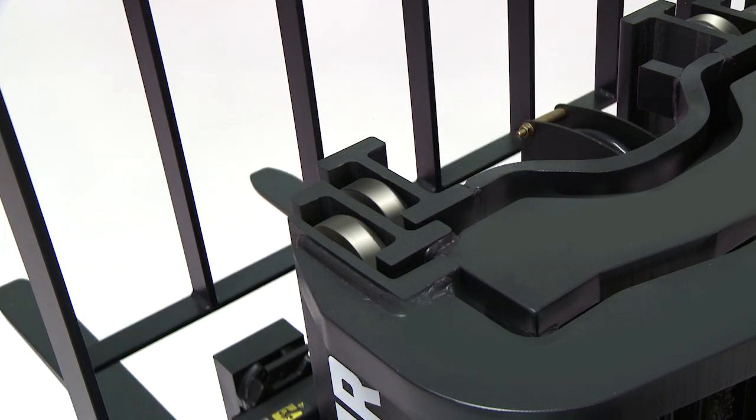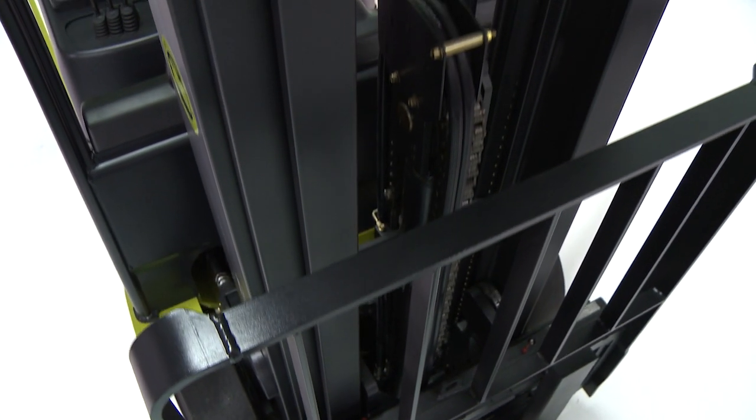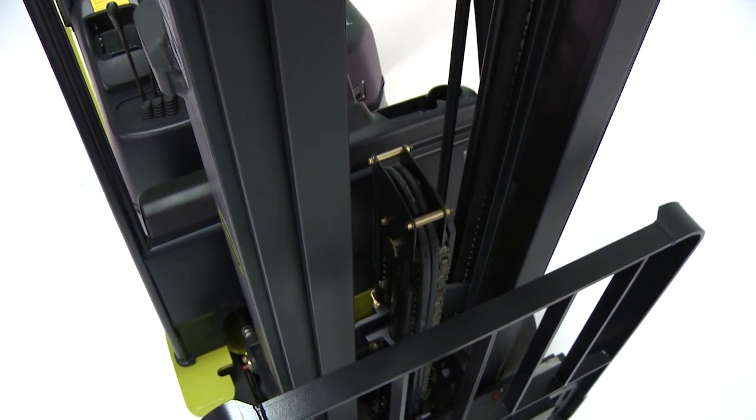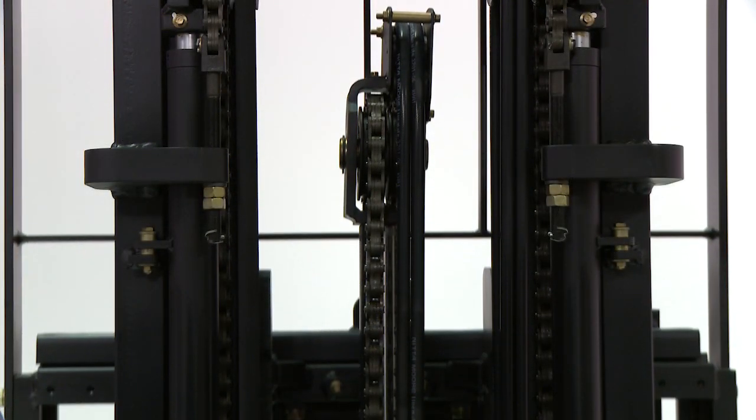For a safer and more stable load, the nested I-channel allows space for cylinders, hoses, and chains for improved visibility.